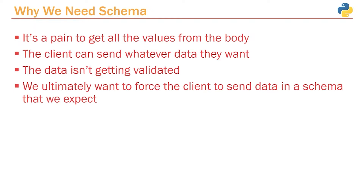This is a big issue. I don't want the front end to send arbitrary data. If the user is trying to create a post, I want the title, I want the content — nothing else. On top of that, the data itself isn't getting validated. How do I ensure that the user is sending what I want? What if the user sends a blank title? I can't have a post with a blank title. So how can we validate that the data the user sends is actually valid?